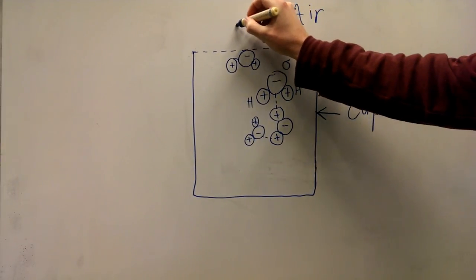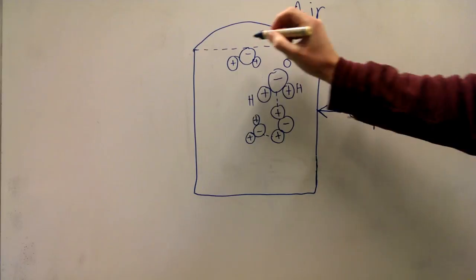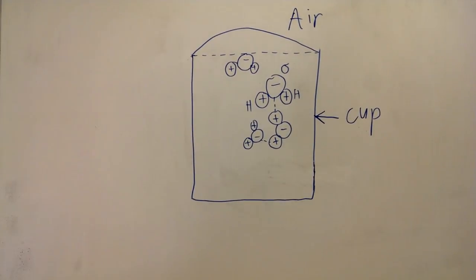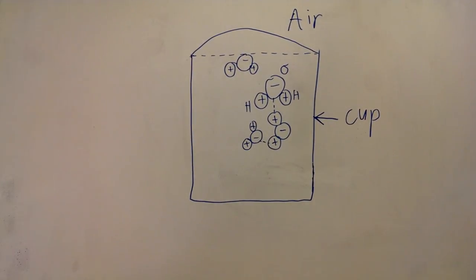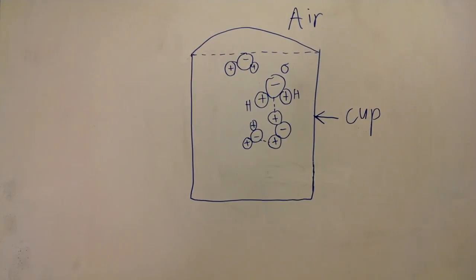This is also why a bulge is being formed instead of leaking when you pour too much water in a cup. The effect that creates this bulge is called surface tension.